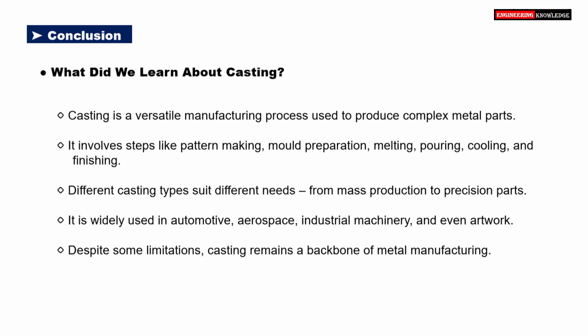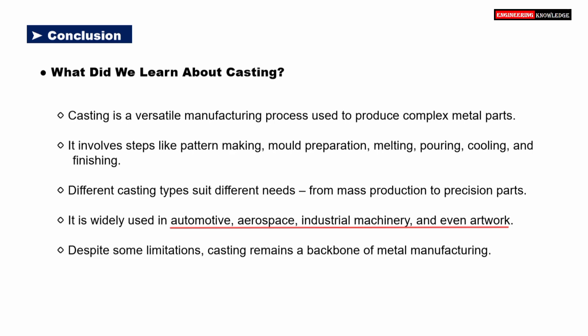Let's summarize what we've learned about the casting process. Casting is a highly versatile manufacturing process used to create complex metal parts that would be difficult or expensive to make by other methods. It involves several key steps: pattern making, mold preparation, melting, pouring, cooling, and finally finishing. Different types of casting serve different purposes — some are perfect for mass production, while others are better suited for high-precision components. The process is widely applied across industries including automotive, aerospace, industrial machinery, and even art and decoration. Despite certain limitations, casting remains a backbone of metal manufacturing, thanks to its ability to produce strong, detailed, and economical parts.